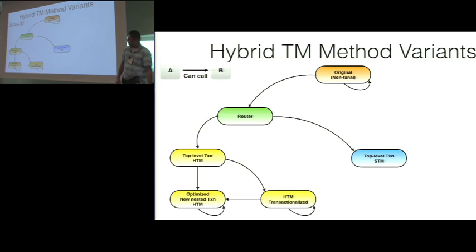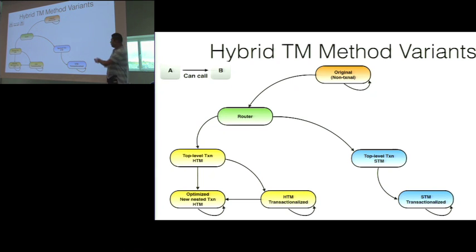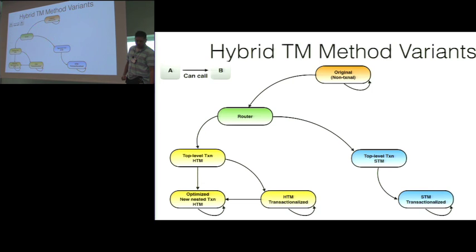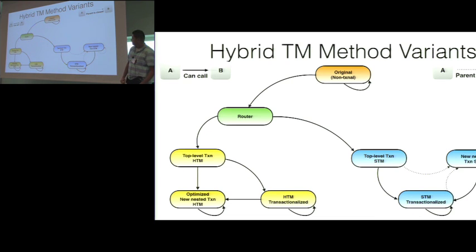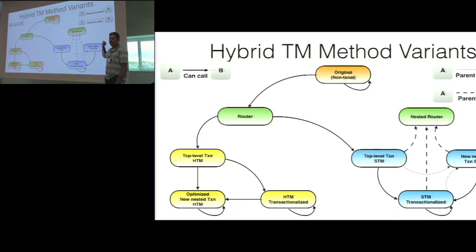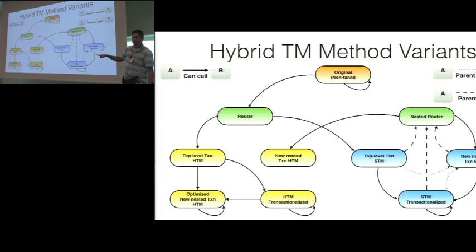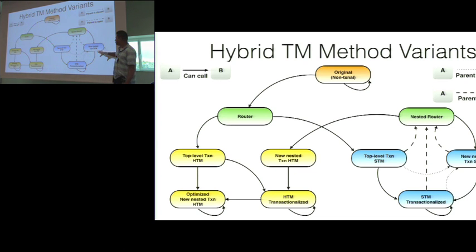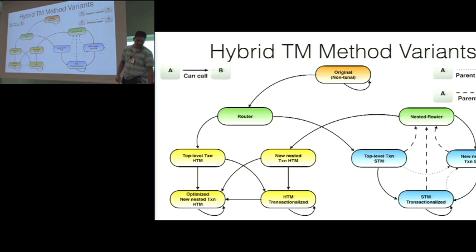On the software side, you can call into the original method versions. Creating a new nested transaction depends on context: if the top level is closed, you create a new software transaction. If the top level is open, you go into a new router method, which can send you into software or hardware. An interesting property is that once you're in hardware, you stay in hardware — you don't come back to software. But once you're in software, you can go back to hardware if your parent transaction is open.